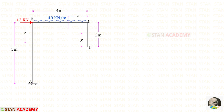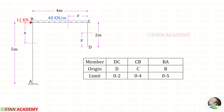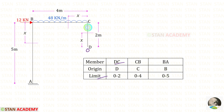You can see that I have made three sections: this one at a distance of X from B, this one at a distance of X from C, and this one at a distance of X from D. Now let us make a table. There are three members. For the section in DC the origin is D, for the section in CB the origin is C, and for the section in BA the origin is B. The limits are: DC from 0 to 2, CB from 0 to 4, and BA from 0 to 5.